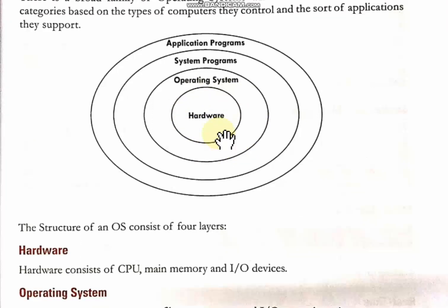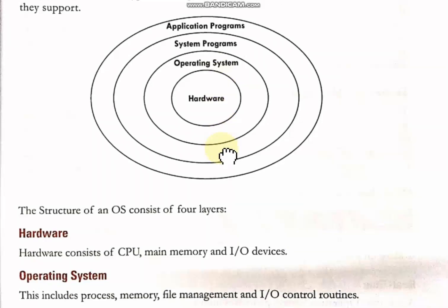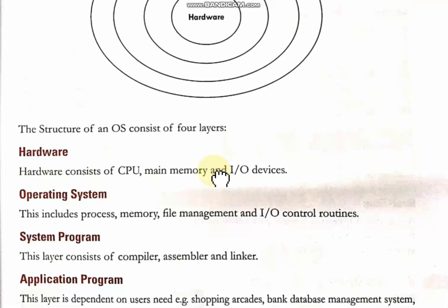The second layer is the operating system — it is a software that acts as an interface between the user and the computer, and it supports features like memory management, file management, and network communication. The third layer is system programs, which consists of programs like compiler, assembler, and linker.